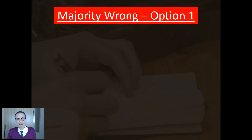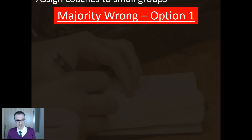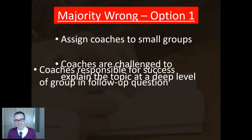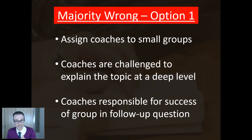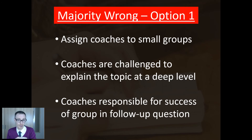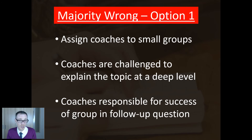What if the vast majority is still getting it wrong? There are two options. The first — and depending on the class this works beautifully — say you've got six kids who get it right. I would make those six kids coaches of their own group, like the peer-to-peer approach we looked at before. Coaches are challenged to explain the topic at a deep level and are responsible for the group's success when I ask a follow-up question later on.